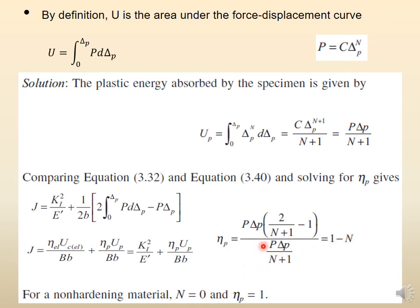So for that type of material, confirm that yes, this capital N equals zero. If it is equal to zero, then eta_P simply equals one for a non-hardening material. So that is why knowing the material models gives you a lot of insight. If N equals zero, then eta_P equals simply one, which is a big achievement.